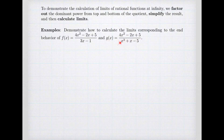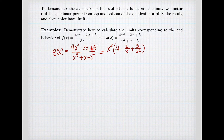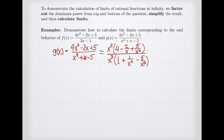For our second example, g of x, we want to understand its limits at infinity using the same process. We factor out x squared from the numerator to get x squared times (4 − 2/x + 5/x²), and factor out x cubed from the denominator to get x cubed times (1 + 1/x² − 5/x³). When taking limits, the terms with x in the denominator go to 0, and x squared over x cubed simplifies to 1 over x.